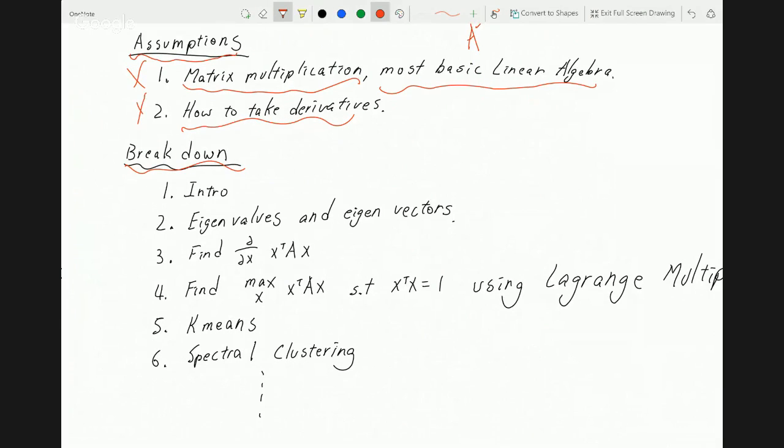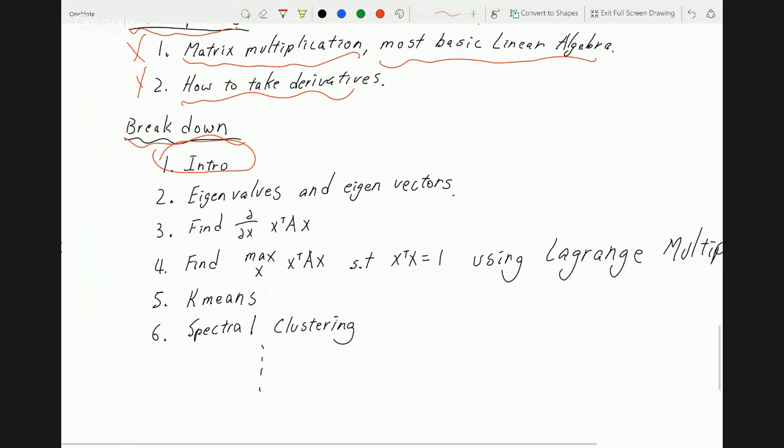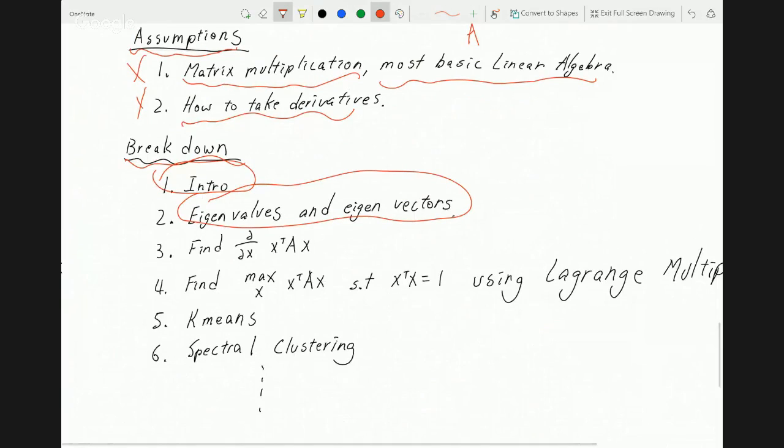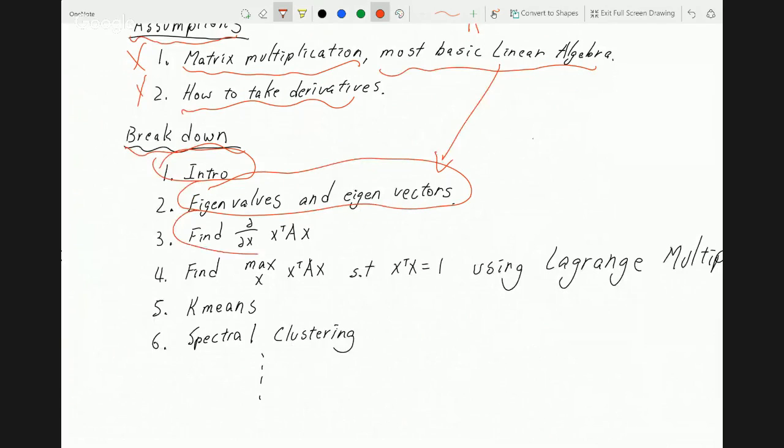And now I'm going to break down the videos I'm going to teach. First, today's video is essentially just an intro on all the topics. And now tomorrow, well, not tomorrow, whenever I feel like it, I will go over the eigenvalues and eigenvectors. That's part of the linear algebra. It's still basic, but I'll cover it. Now, next, we're going to find the derivative of this. Now, x is a vector. A is a matrix. And x is a vector. So how do we take derivative of this? That's going to be one of the videos.